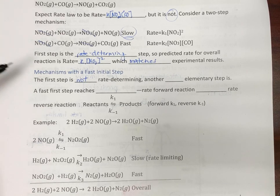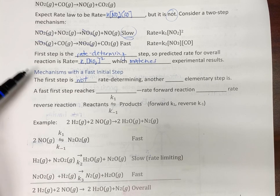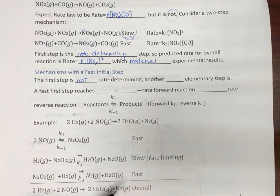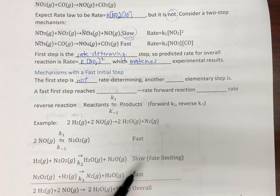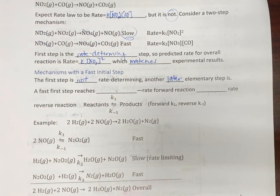Sometimes it happens where the first step that we have is not the slowest, so it's fast. So it's not rate determining, and another elementary step that occurs later is.